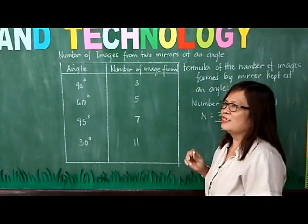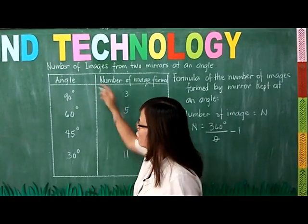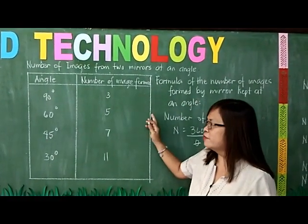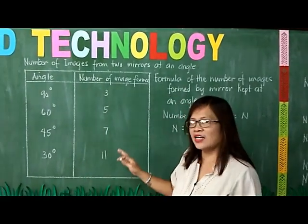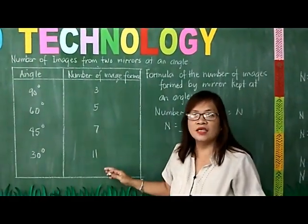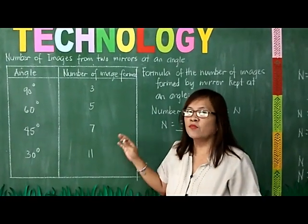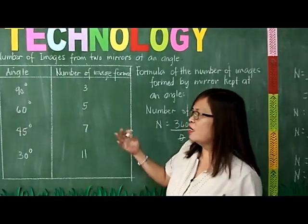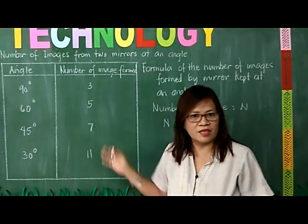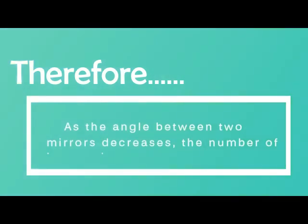As you will notice, the relationship between the angle and the number of images formed is inversely proportional. As the angle decreases, the number of images formed increases. Therefore, the angle and the number of images formed are inversely proportional.